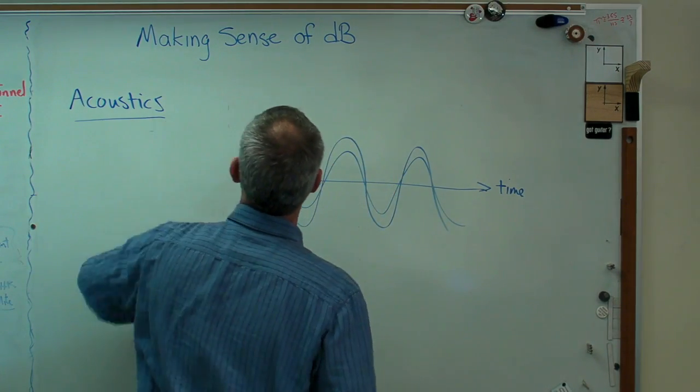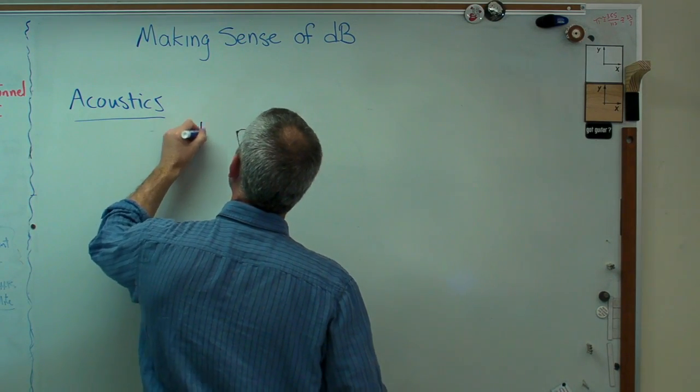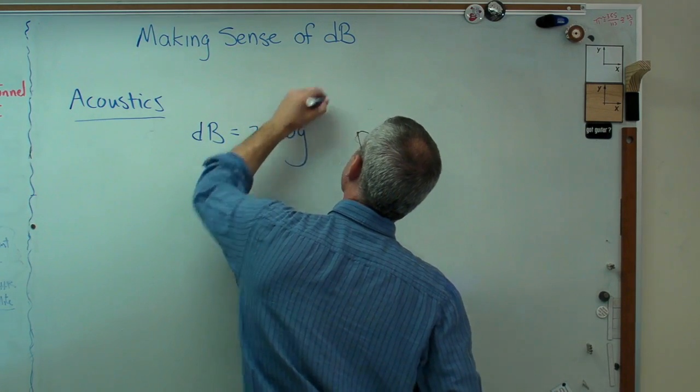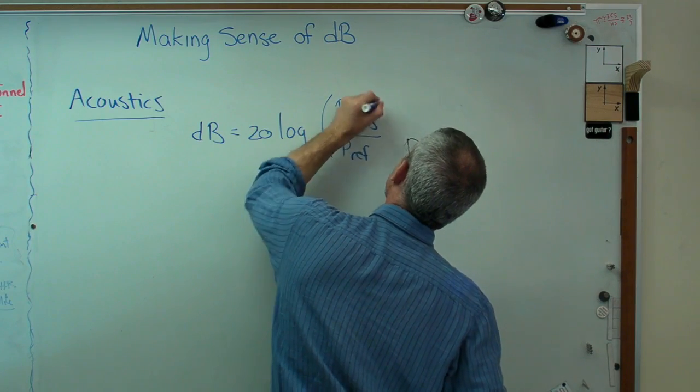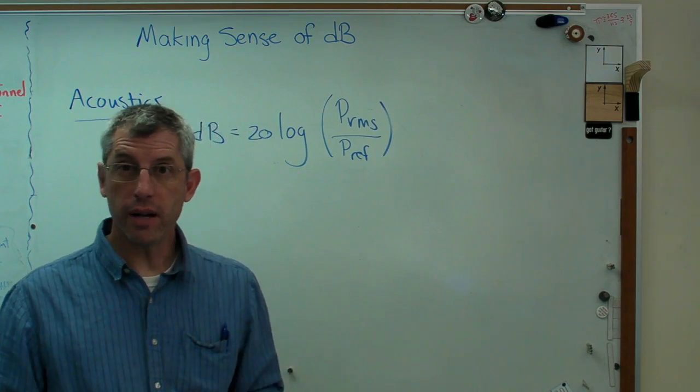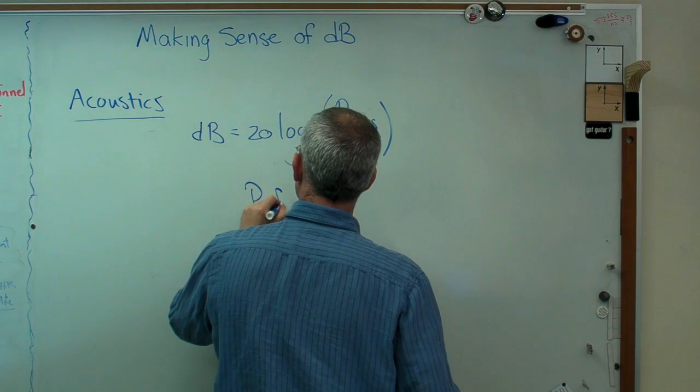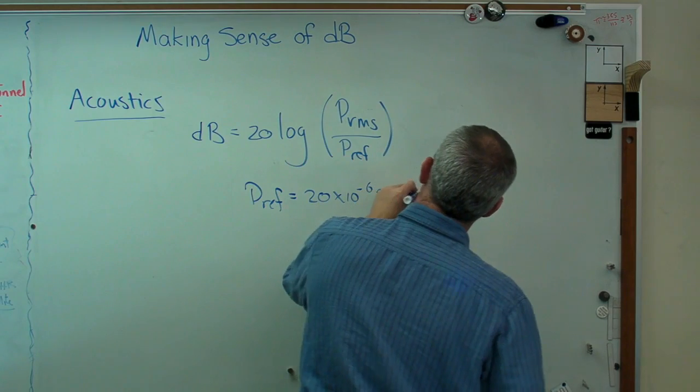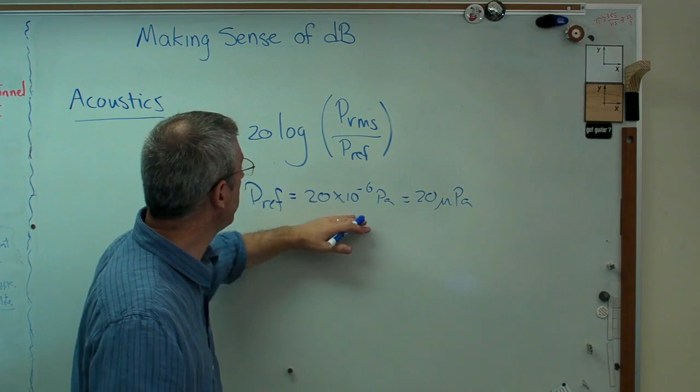So in the acoustics world, decibel is always expressed this way. It's going to be 20 log, and it's going to be pressure RMS over P ref. Well, the answer you get is obviously going to depend on what's P ref. By international standards, this is an ISO standard, P ref is 20 times 10 to the minus 6 pascals, or 20 micropascals. We had to agree on something, we agreed on that.